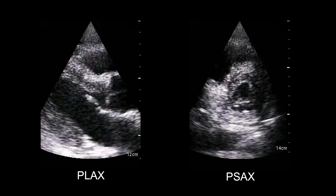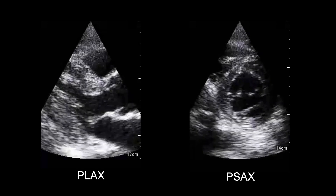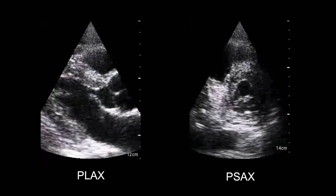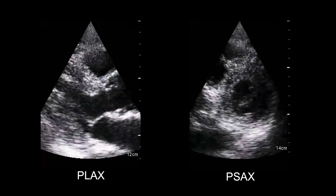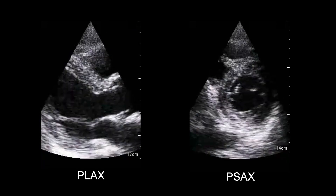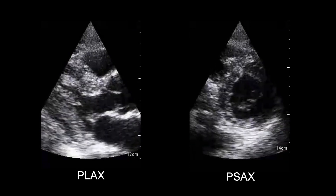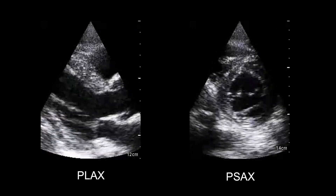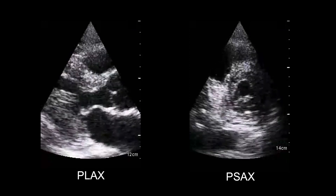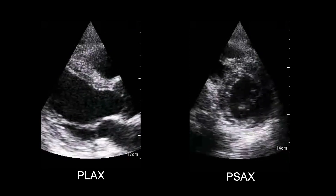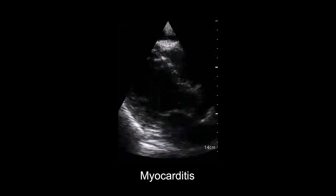This is illustrated in these parasternal images. We can see that the left ventricle has hyperdynamic systolic function. This vigorous contraction of the left ventricle can be seen in pathological states such as sepsis or hypovolemia.